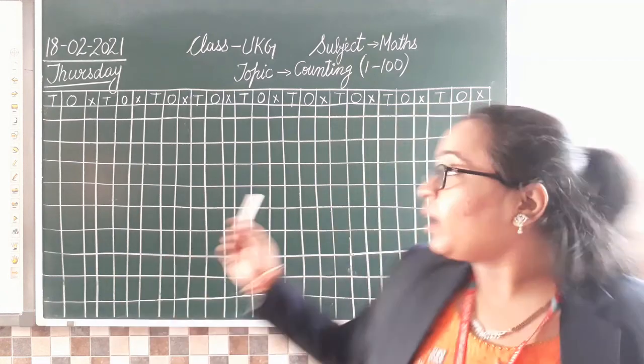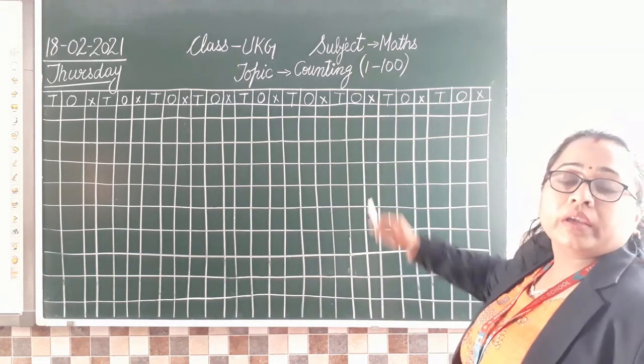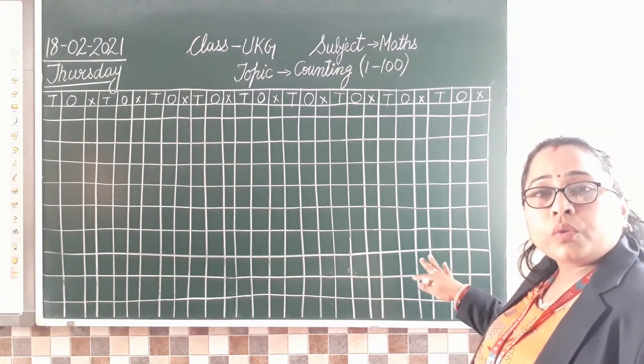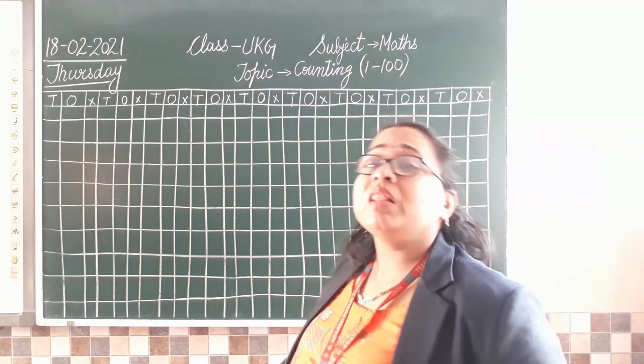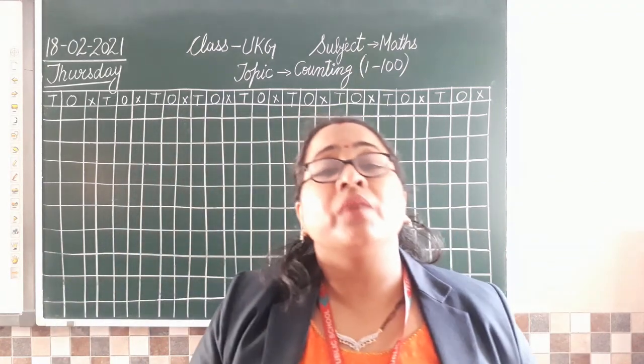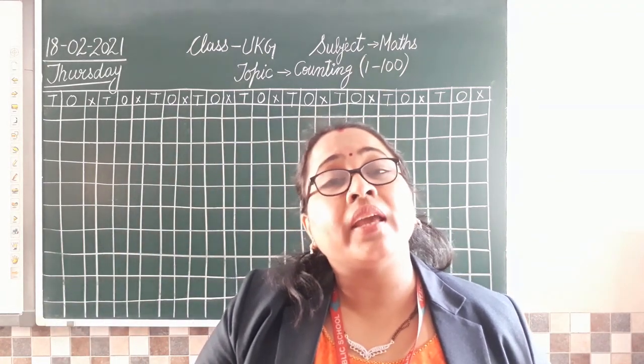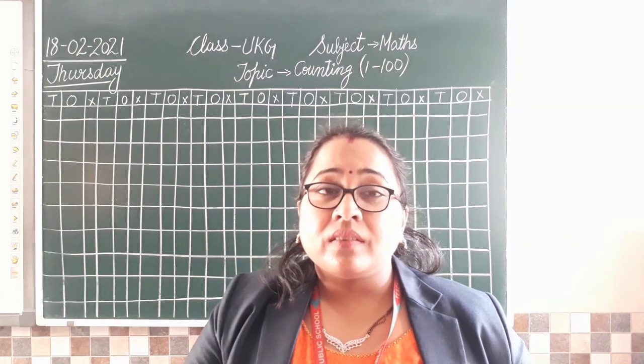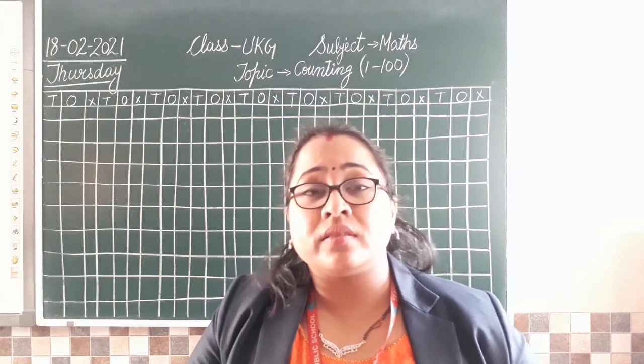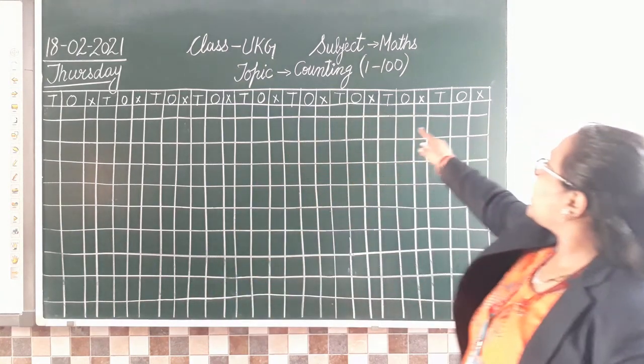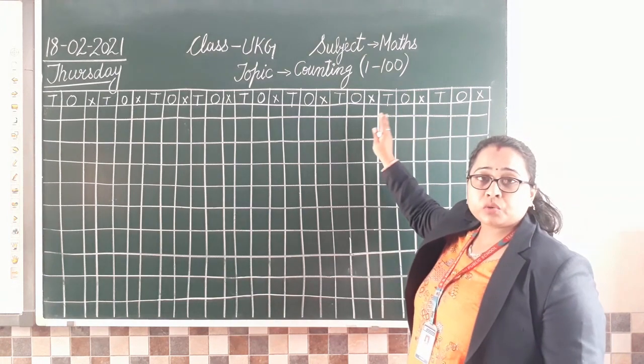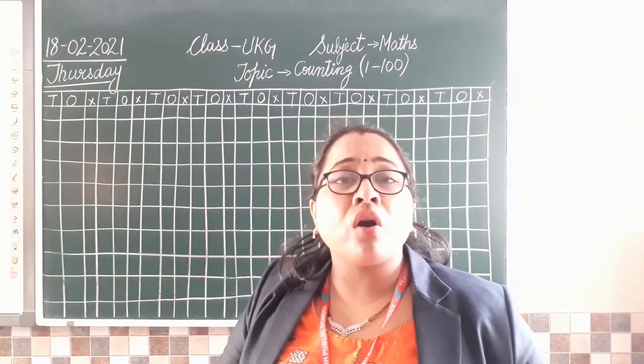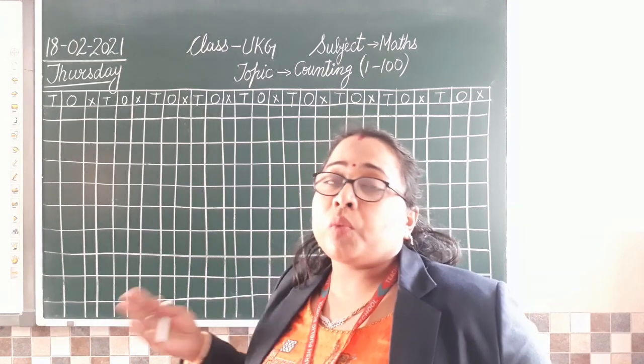Let's start writing the counting. As you all can see on the board, I have made a grid here. You have the same pattern in your notebook. Now, when we learnt counting, if you remember, we started from 10s and 1s. And I taught you what is 10s and what is 1s. T is 10s, O is 1s. And this is why we always write T O here. What is T for 10s and what is O for 1s.